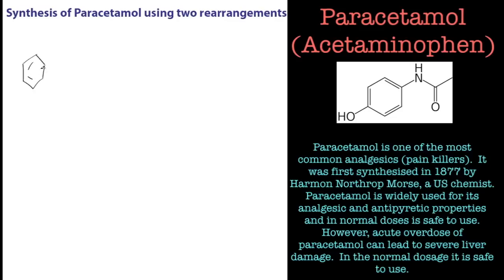First of all, we'll draw phenol. The first thing we need to do is acetylate it with an acetyl group, so we use acetyl hydride and aluminium chloride as the Lewis acid. The Fries rearrangement uses a Lewis acid and it can go in the ortho or the para position.